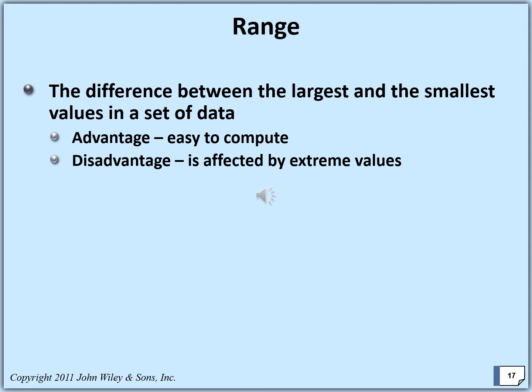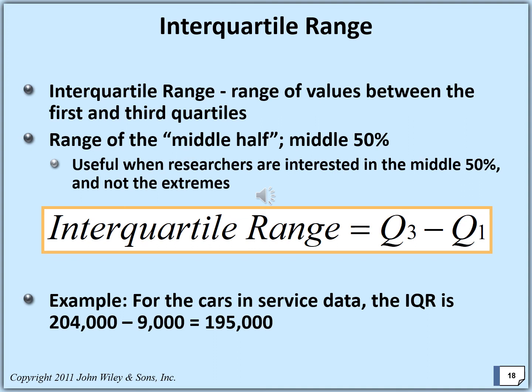The range, by definition, is the difference between the largest and the smallest value in a set of data. The advantage is it is easy to compute. The disadvantage is it is affected by extreme values, so if we have a wide spread, the range will be very wide. The range is affected by outliers and may be an unusual measure of variability. For that reason, if the researcher is interested in the middle 50% — the middle half — they would ignore the first quarter and the fourth quarter, and work with Q2 and Q3.